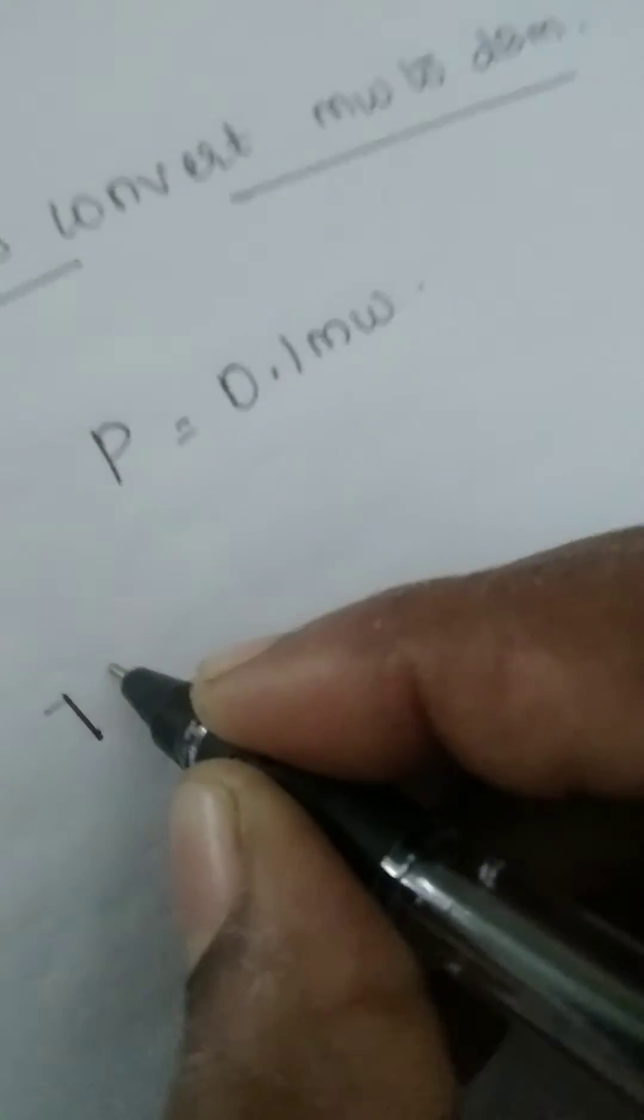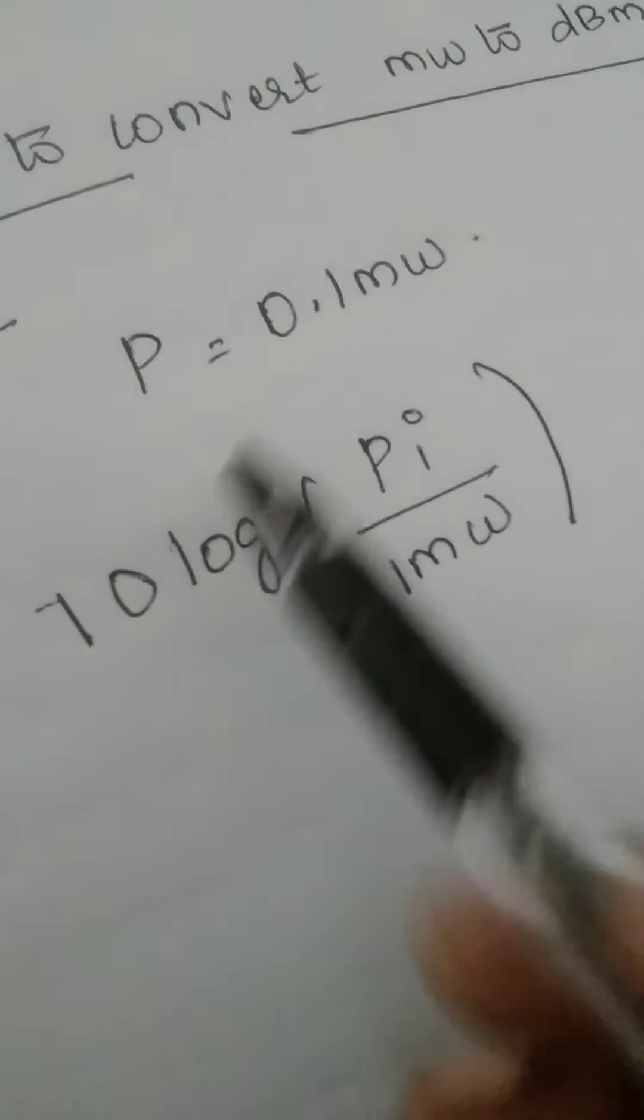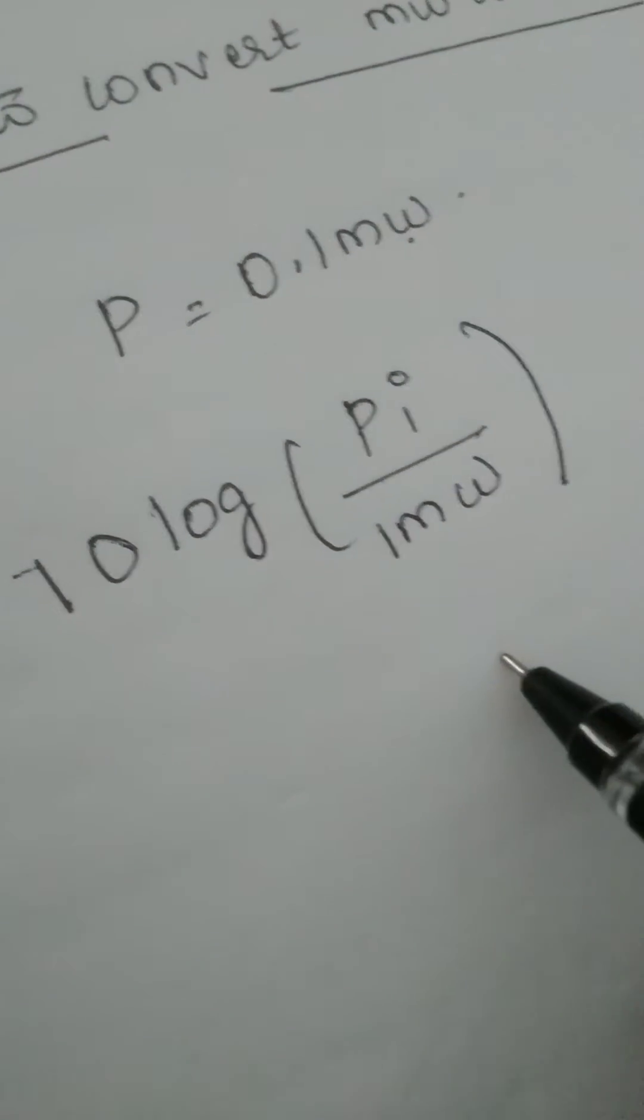The formula is 10 log of P i by 1 milliwatt. So by using this dB formula, you can convert from milliwatt into dBm.